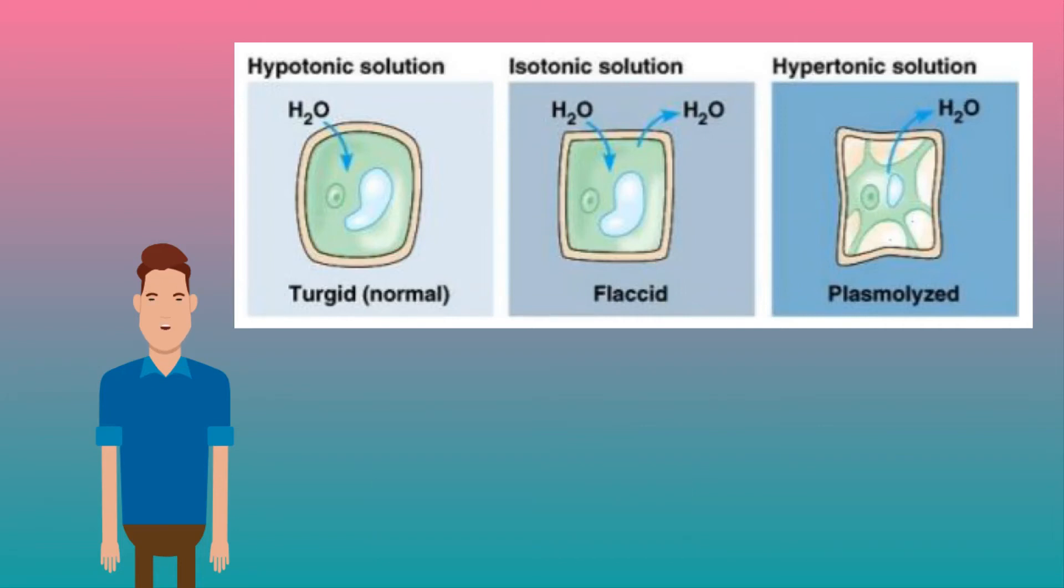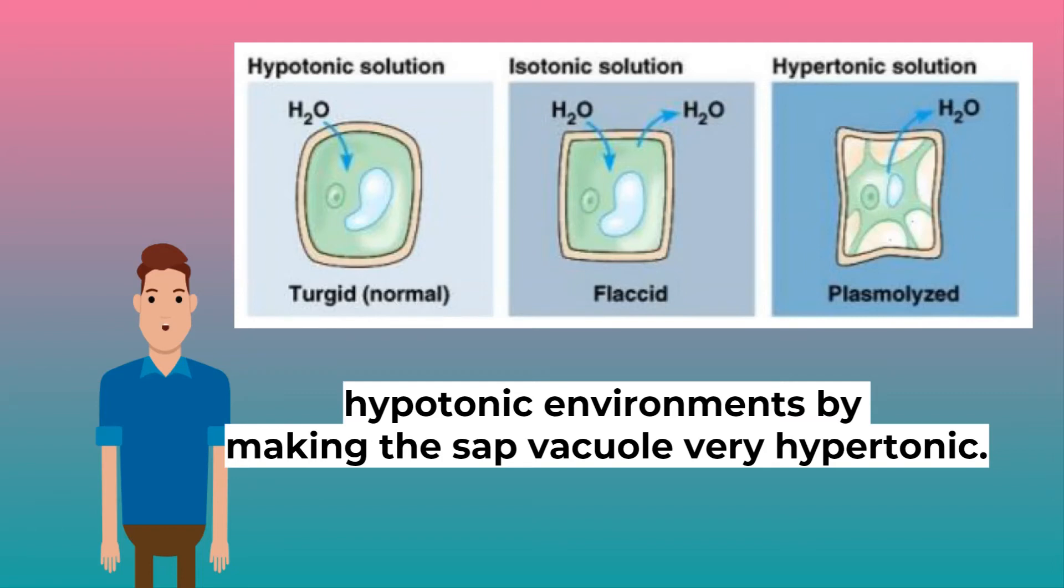The cell will go turgid, but the cell wall prevents bursting. Turgid cells are strong and supportive. Plant cells try to be in hypotonic environments by making the sap vacuole very hypertonic.